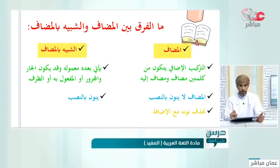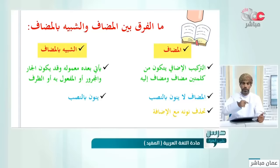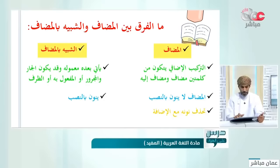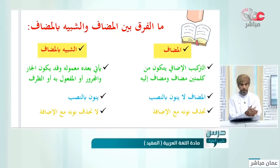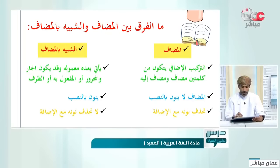المضاف لما يكون مثنى تحذف نونه مع الإضافة. في ندائنا للمثنى نقول 'يا طالبان اجتهد في دراستكما' إذا عينّا هذين الطالبين. لكن لما نأتي بالتركيب الإضافي نقول 'يا طالبَي العلم' بدون النون. أما في الشبيه بالمضاف فلا تحذف نونه مع الإضافة.